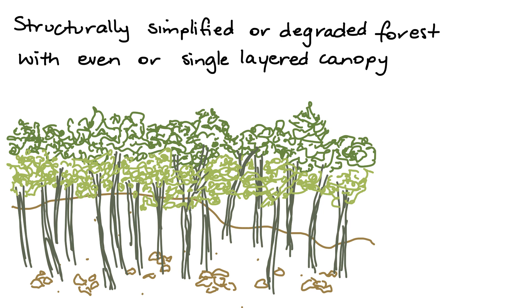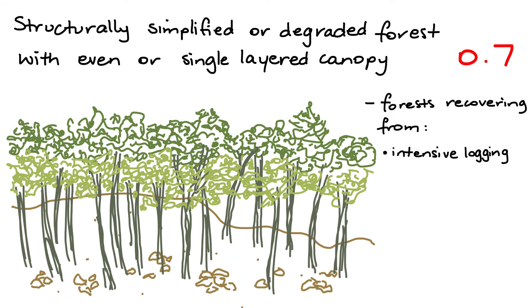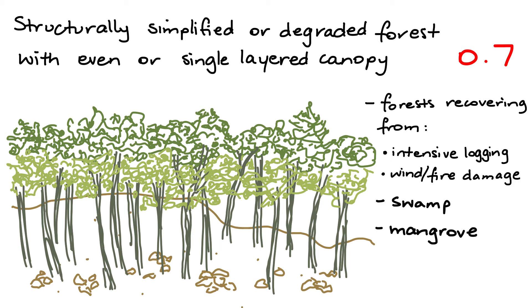Category 2: Structurally simplified or degraded forest with an even or single-layered canopy, with a coefficient of 0.7. These include forests recovering from intensive logging, wind and/or fire damage, as well as swamp, mangrove and peat forests recovering from logging or other disturbances.